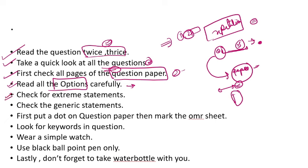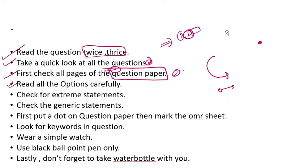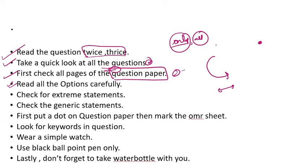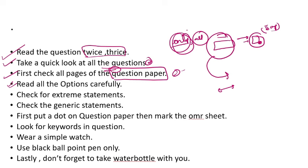Check for extreme statements. Sometimes a question is written with words like 'only' or 'all.' For example: 'Only this ministry can handle this case.' These are extreme statements. If you know the answer, well and good. But if you don't know and need to take a guess, usually extreme statements where 'only' or 'all' things are mentioned are wrong — there is a 50–60% chance they are wrong.